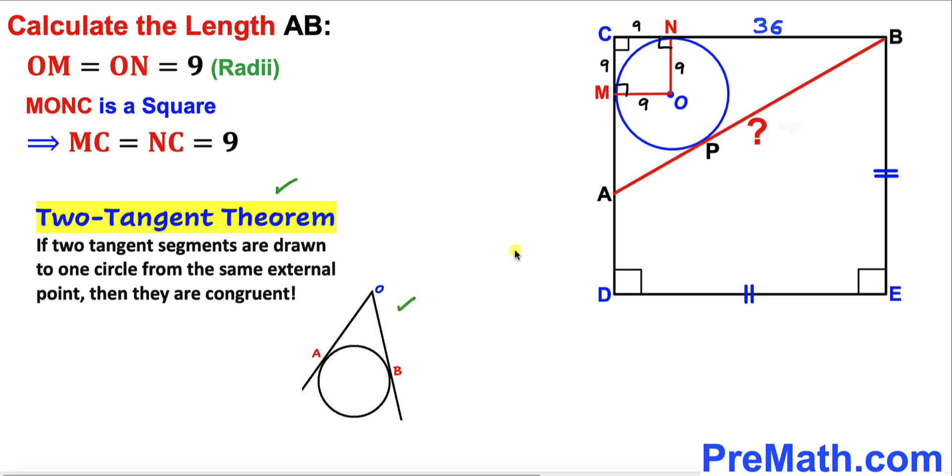Therefore, in our case these two tangents NB and PB are going to be congruent. If this is 36 units, this has to be 36 units as well.